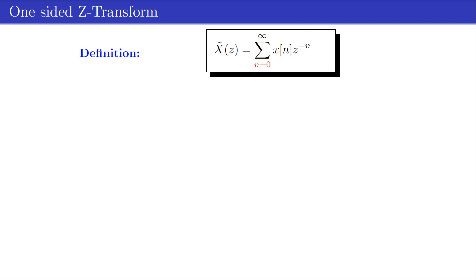The z-transform X(z) of a sequence x[n] discussed so far is the two-sided z-transform. The one-sided z-transform X̃(z) is defined by the same equation but with the summation index n starting from n = 0 rather than n = −∞. Most properties are the same as the two-sided z-transform; one that differs is the shift property.